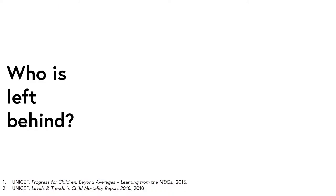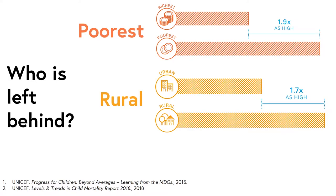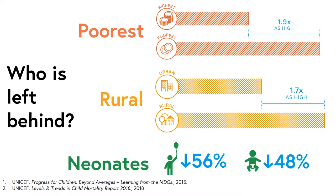We have talked about which countries have been left behind, but which specific populations have been left behind within and across countries? There are three key groups. First, the poorest: the under-5 mortality rate is 1.9 times higher in the poorest households compared to the richest. Second, rural populations: under-5 mortality is 1.7 times higher in rural than urban populations. Thirdly, neonates: progress has been slower in the MDG era for neonates than for the under-5 age group as a whole, with a 48% reduction in neonatal mortality versus a 56% reduction in under-5 mortality.